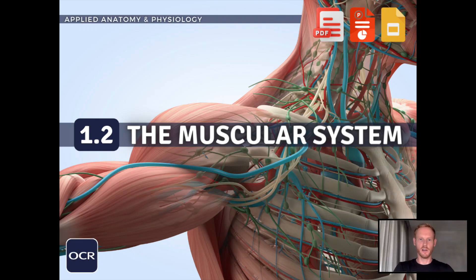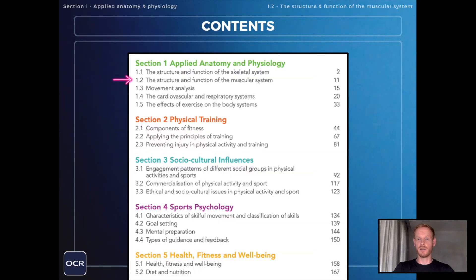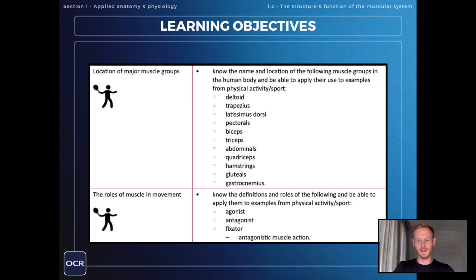Hello and welcome to another complete OCR GCSE PE lesson. This one is on topic 1.2, the structure and function of the muscular system, moving on to the second and final learning objective on the roles of muscle in movement.